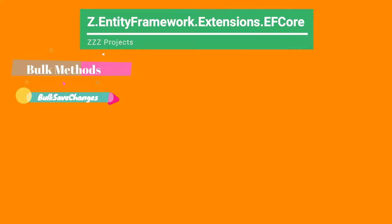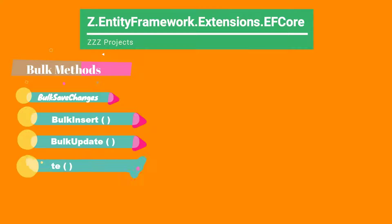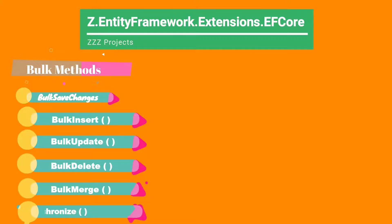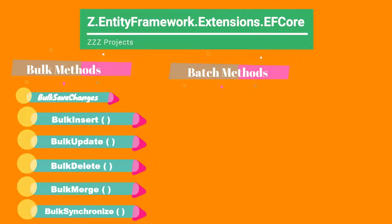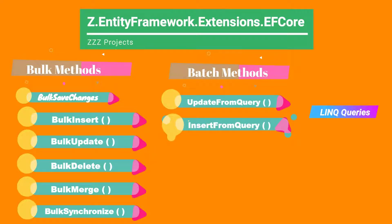Other than BulkSaveChanges, it also offers BulkInsert, which is an upgraded version of BulkSaveChanges and gives even better results as it is specifically optimized for adding multiple entities. Another method is BulkUpdate, used for updating multiple entities in the database. Next we have BulkDelete, used for deleting bulk entities. Then we have BulkMerge and BulkSynchronize. Apart from these bulk methods, it also offers a few batch methods. If you are using LINQ queries to access the database, use these methods: UpdateFromQuery, InsertFromQuery, and DeleteFromQuery.